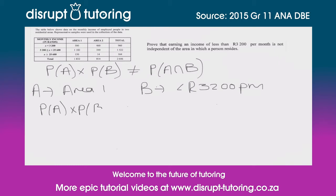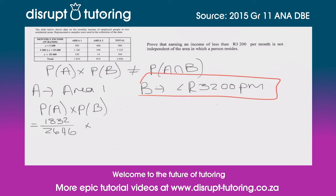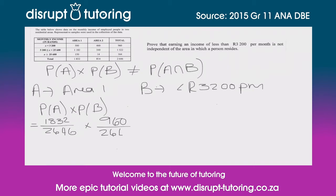The probability of A — someone living in Area 1 — is 1832 people surveyed from Area 1 over the total, so that's 1832 over 2646. Times the probability of B — someone earning less than 3200 — there are 960 people that earn less than 3200, so that's 960 over 2646. When we plug that into our calculators we get 25.12%.